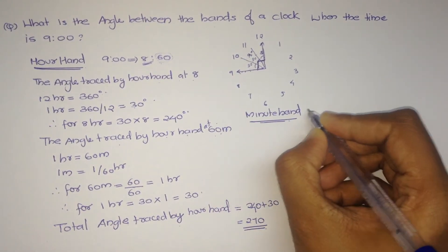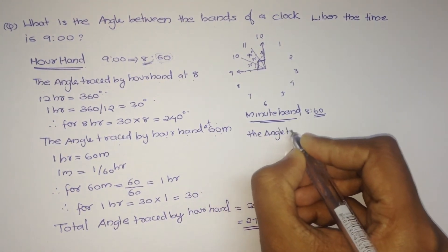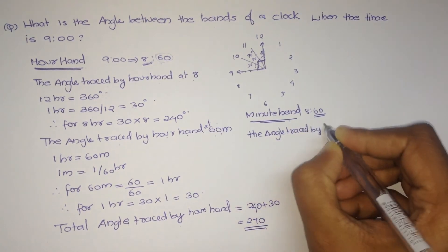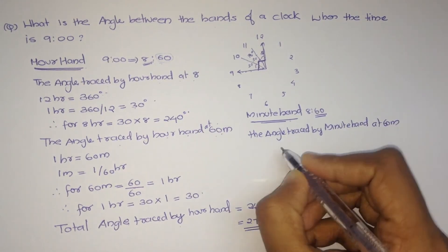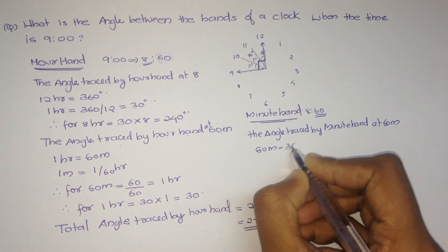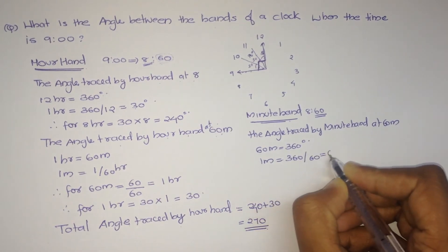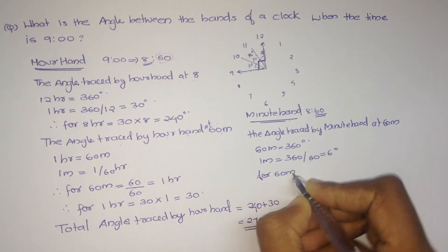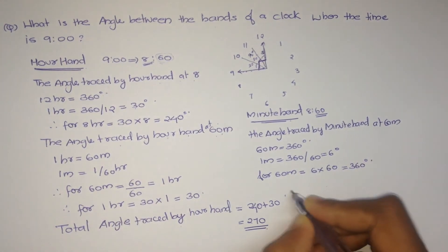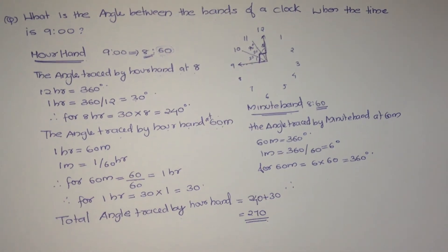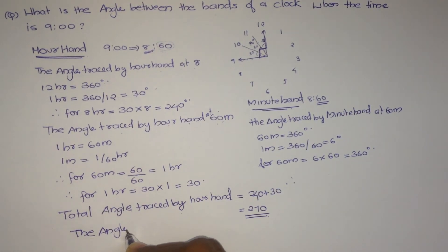In the case of the minute hand, we only want to take this part. Therefore, the angle traced by the minute hand at 16 minutes — we know that 60 minutes equals 360 degrees, therefore 1 minute equals 360 divided by 60, which equals 6 degrees. For 16 minutes, that equals 6 into 16, which is equal to 96 degrees.